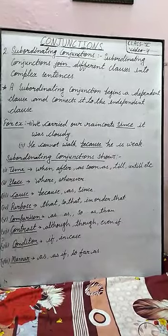What are subordinating conjunctions? Subordinating conjunctions join different clauses into complex sentences. A subordinating conjunction begins a dependent clause and connects it to the independent clause. For example,